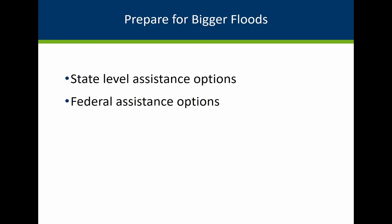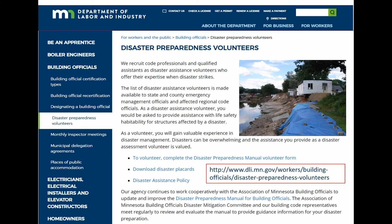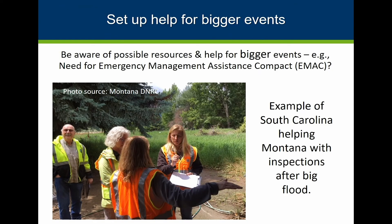Our last main topic is to note some options for assistance with bigger floods, both at the state and federal levels. Be aware of resources for bigger events. The Department of Labor and Industry site has information on how to get help from other building officials around the state and to volunteer to help other parts of the state. It also has the link to the Disaster Preparedness Manual shown earlier. In really big floods, the state may need to ask for help from outside the state. Emergency Management Assistance Compact or EMAC assistance can be requested by the state's Emergency Management Agency on behalf of the governor if there is a governor-declared emergency.